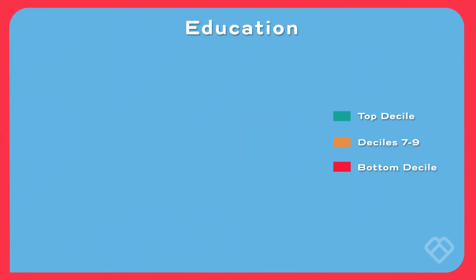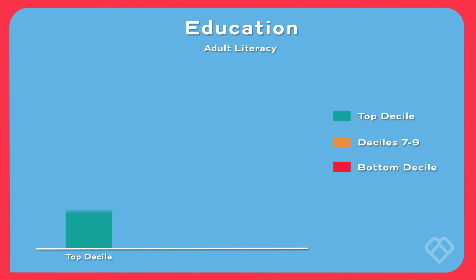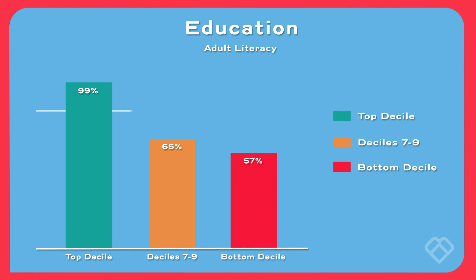The third statistic is education, with two measures: adult literacy and school-age enrollment. What we see is that the education statistics are much closer between wealthier and poorer countries. In the top decile virtually 100% of the population is literate; in deciles seven through nine it's about 65%; and in the bottom decile it's 57%. The difference isn't as stark in education as in the other metrics.